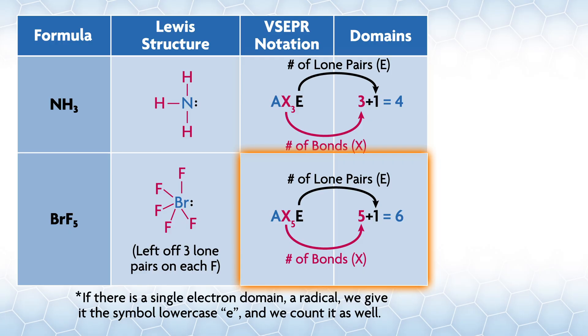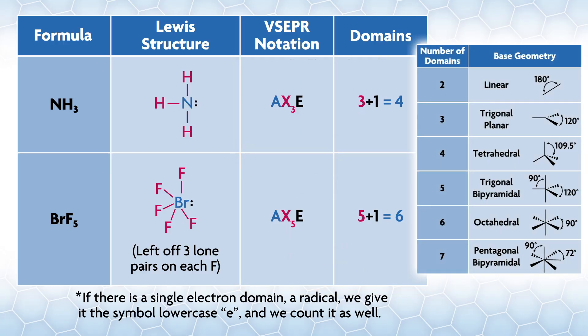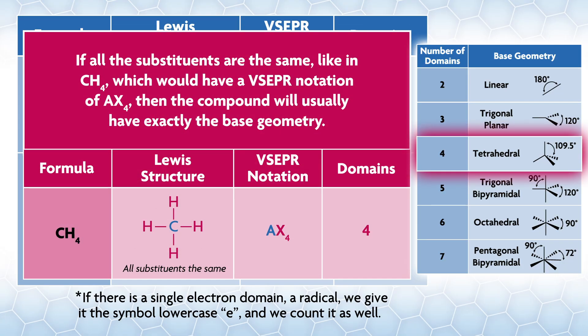For our examples, NH3 has a VSEPR notation of AX3E which has three plus one things around the central atom, so four domains. For BrF5 the notation is AX5E which has five plus one equals six domains. Next we need to find the base geometry for that number of domains. These base geometries are the starting point for our 3D structure.